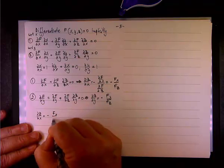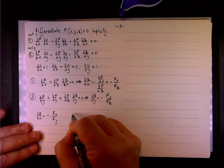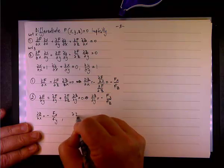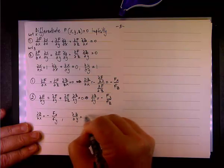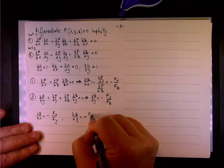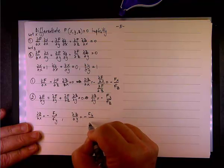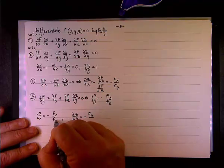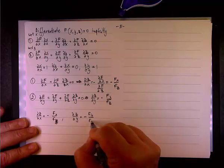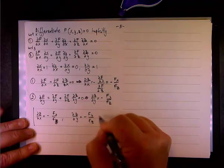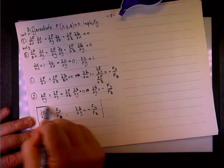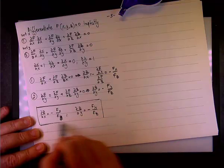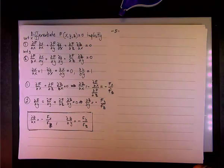So, we have these two results, ∂z/∂x equals negative f_x, divided by f_y, and ∂z/∂y equals negative f_y. So, this is f_z, divided by, I'm sorry, yeah, this is f_z, and this is f_z.